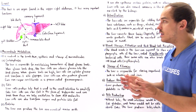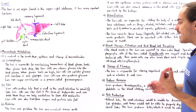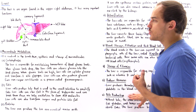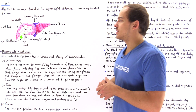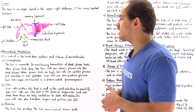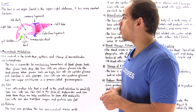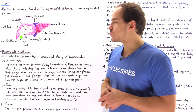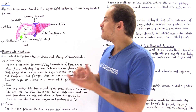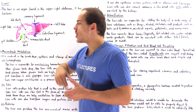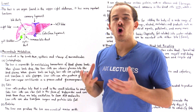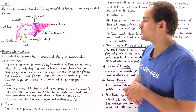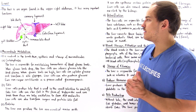The liver is not only an endocrine gland, it is also an exocrine gland. Another important structure that functions with the liver is known as the gallbladder, and we'll see what the gallbladder does in just a moment.